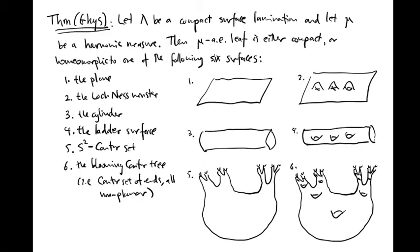Every compact lamination admits a harmonic measure, so it makes sense to talk about typical leaves of a lamination.